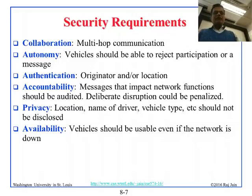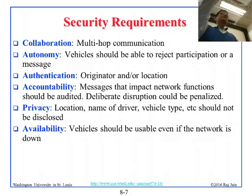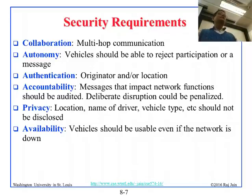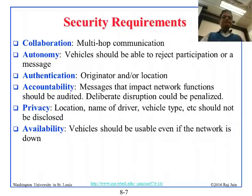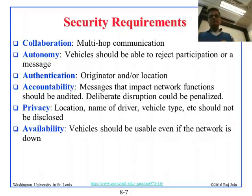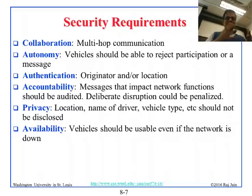Tampering involves changing sensor readings to damage someone or commit fraud. Security requirements include: collaboration — multi-hop communication where a message is relayed car to car; autonomy — vehicles should be able to reject participation; authentication — knowing who sent the message; accountability — determining if information is reliable; privacy of driver location, name, and vehicle type; and availability — vehicles should be usable even when the network is down.